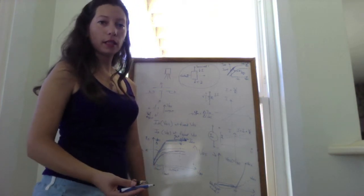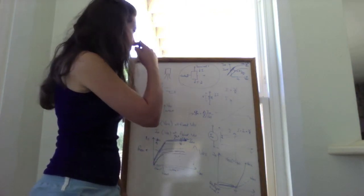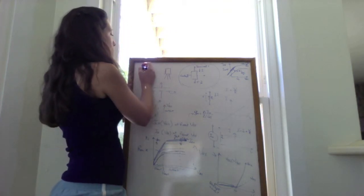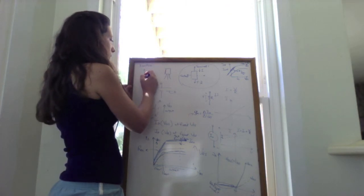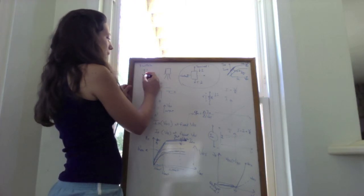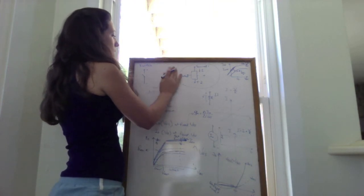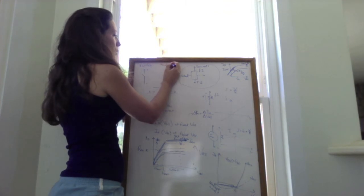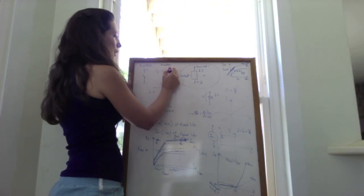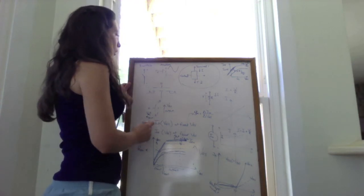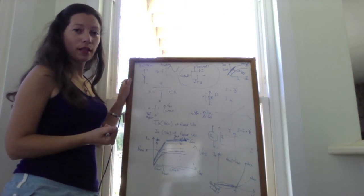There are two key applications for MOSFETs. The first is as a switch, where the device is either on or off — zero or one, boolean. The second is for analog applications, where an input signal is amplified to produce a larger output signal. We also have two flavors of MOSFETs: an NMOS and a PMOS.